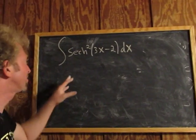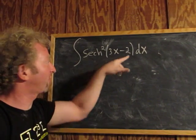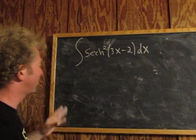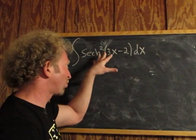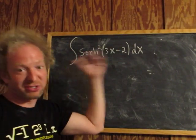In this video we're going to integrate the hyperbolic secant squared of 3x minus 2. If it was just the hyperbolic secant squared, it would integrate to the hyperbolic tangent. But it's not. We have this 3x minus 2.